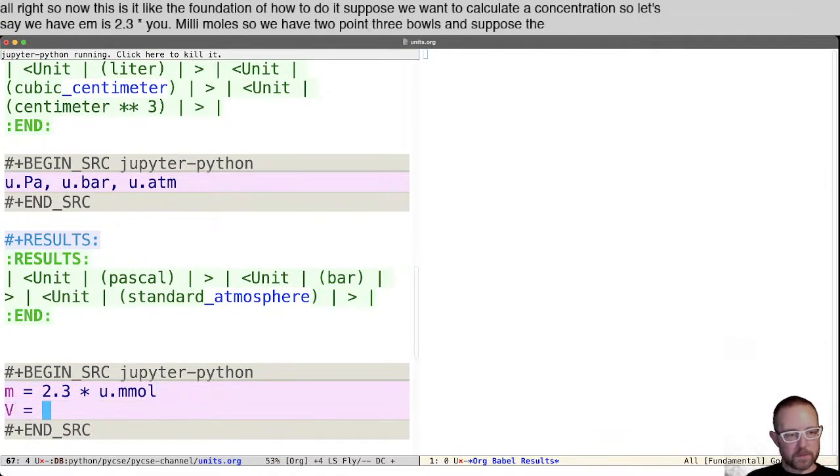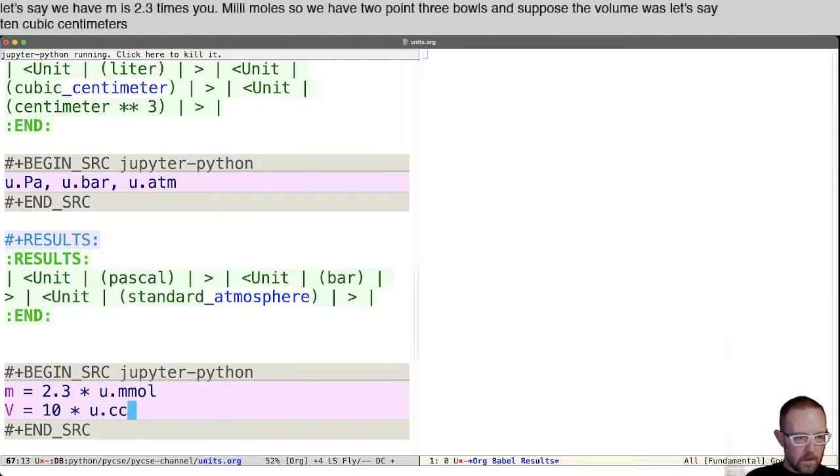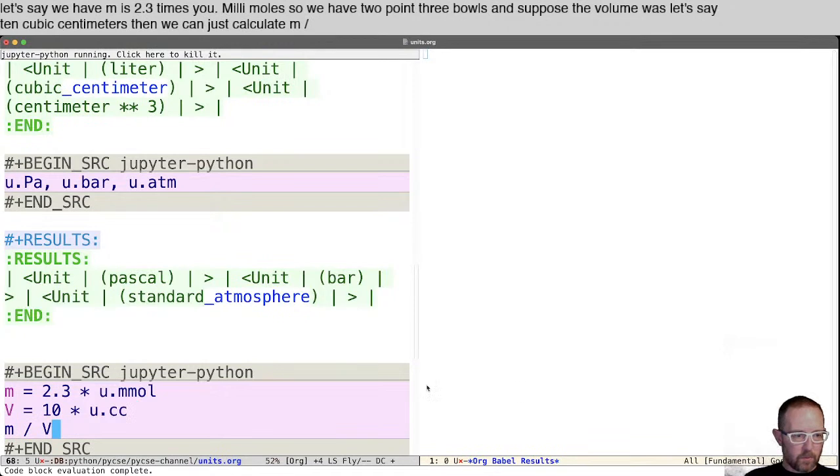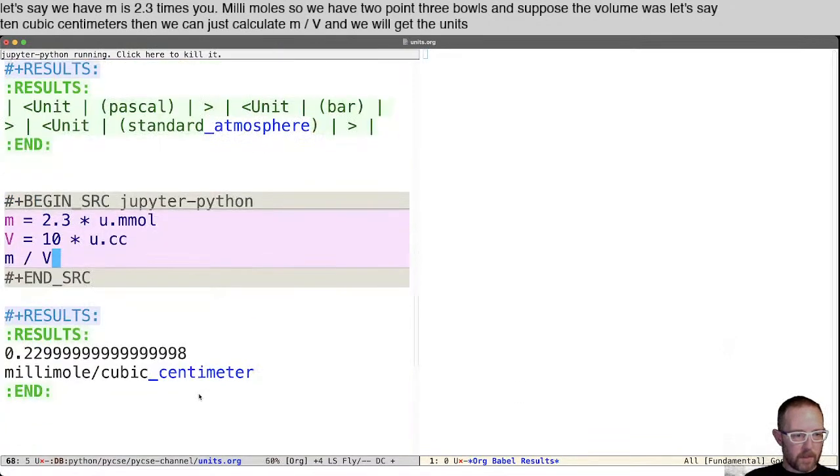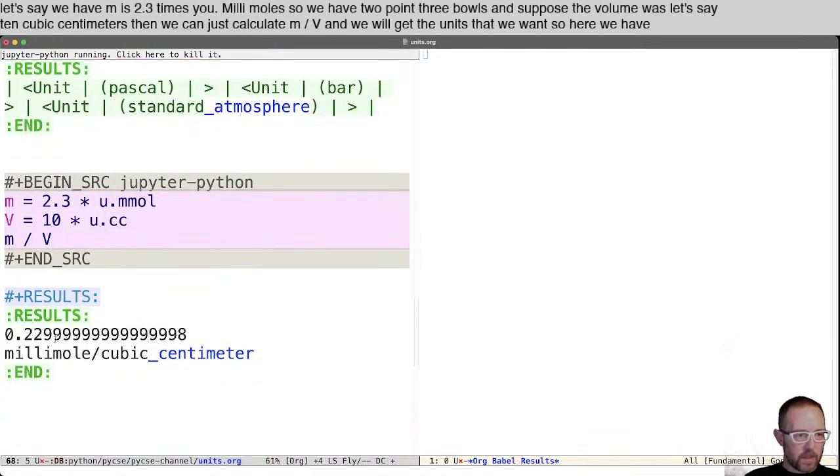Then we can just calculate M divided by V and we will get the units that we want. So here we have 0.22999 millimoles per cubic centimeter. And that's not super, maybe those aren't the units that you want. We can convert those.